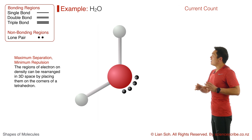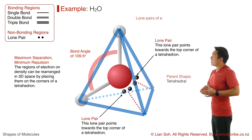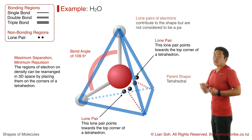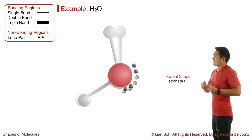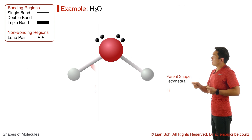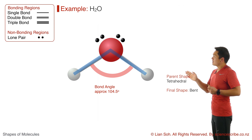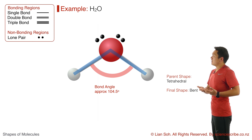When arranged, you come back to the parent shape of tetrahedral. But because the lone pairs contribute to the shape without being considered part of it, the overall final shape ends up being bent, or V-shaped.